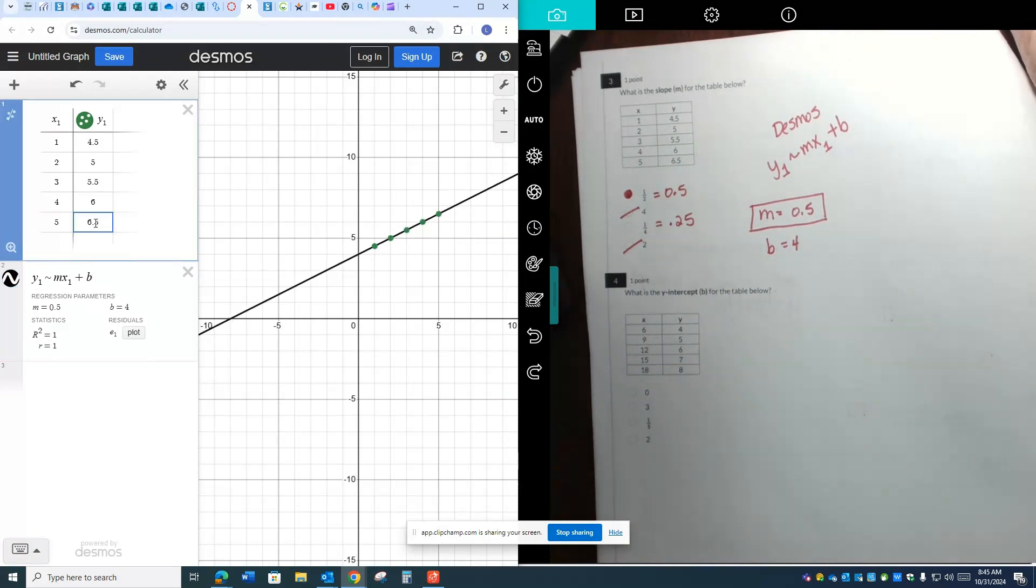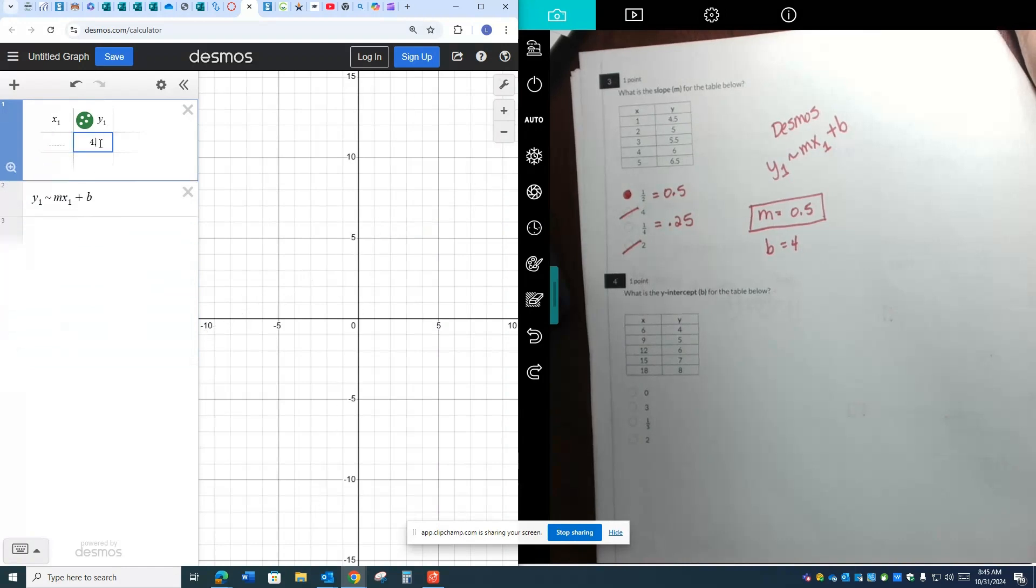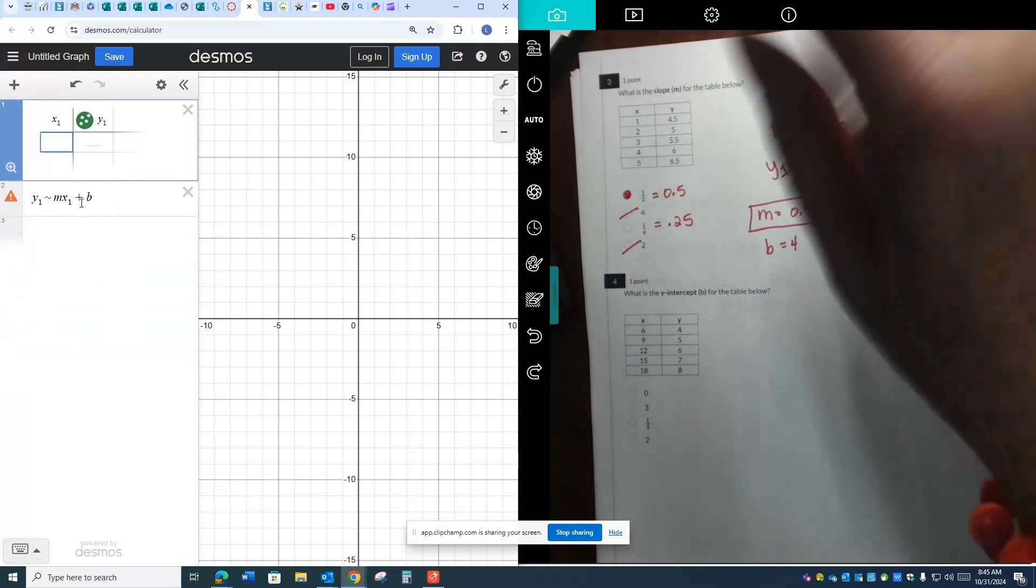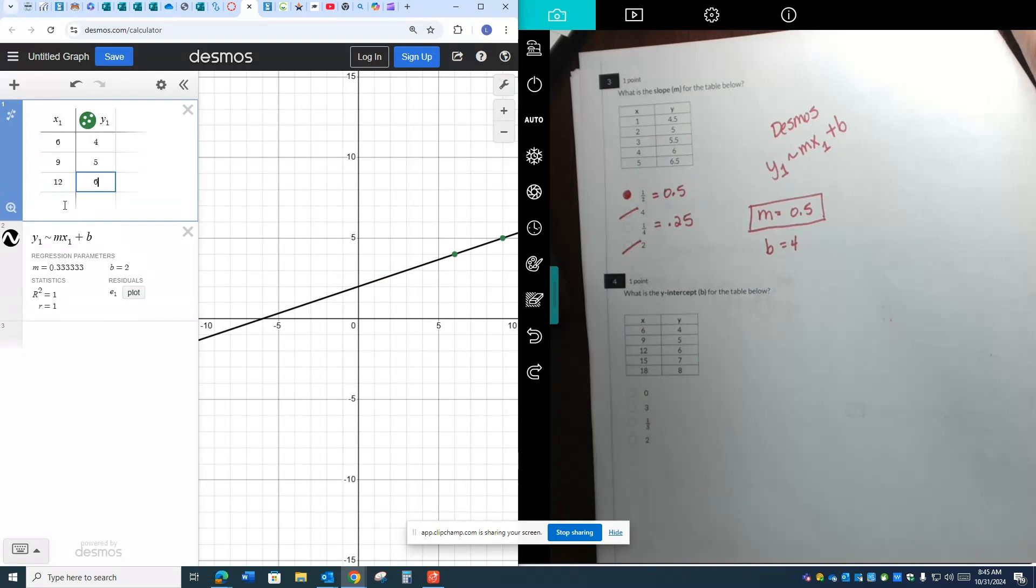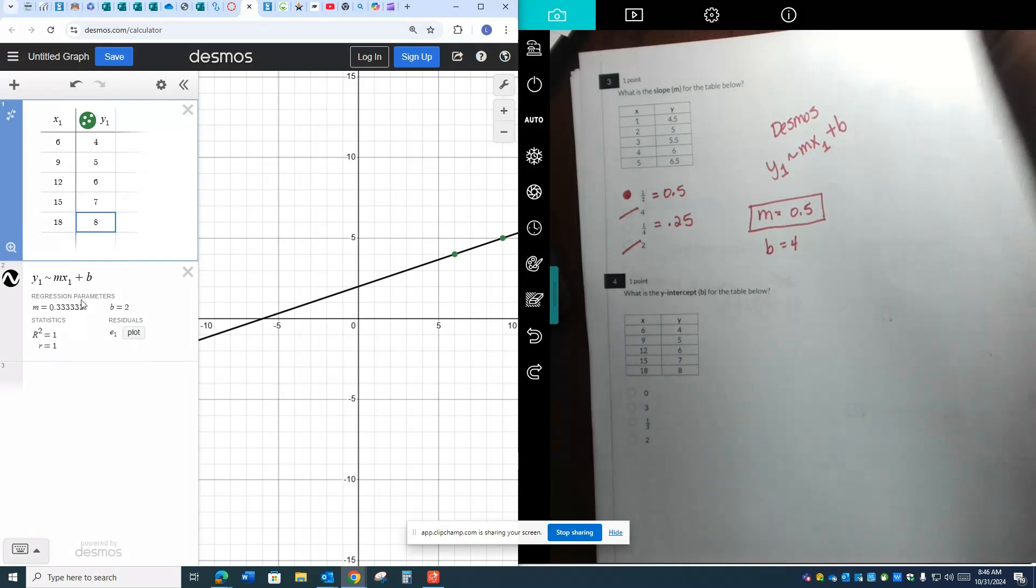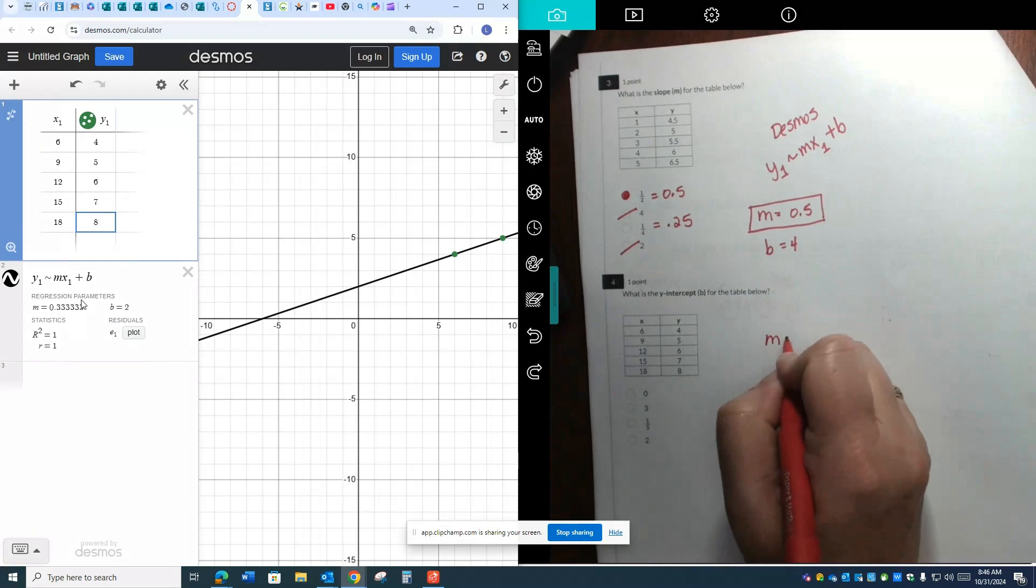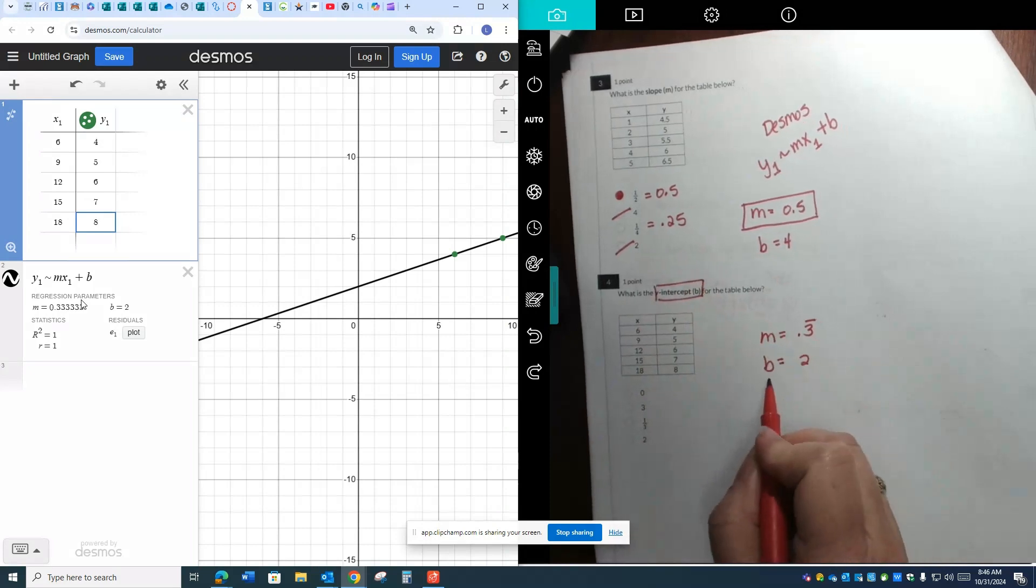All right, and then the y-intercept. The nice thing about Desmos is if you just delete all your data and not delete the table and leave box 2 the way it is, just input new data, and this information starts to change for you to match the data in the table. So 12 paired up with 6, and 15 paired up with 7, and 18 paired up with 8. And then it tells me right here that my m is 0.3 repeating. I'm going to write it down, 0.3 repeating, and it tells me that my b is 2. This one's asking me for the b. So there's my b, 2. Easy breezy.